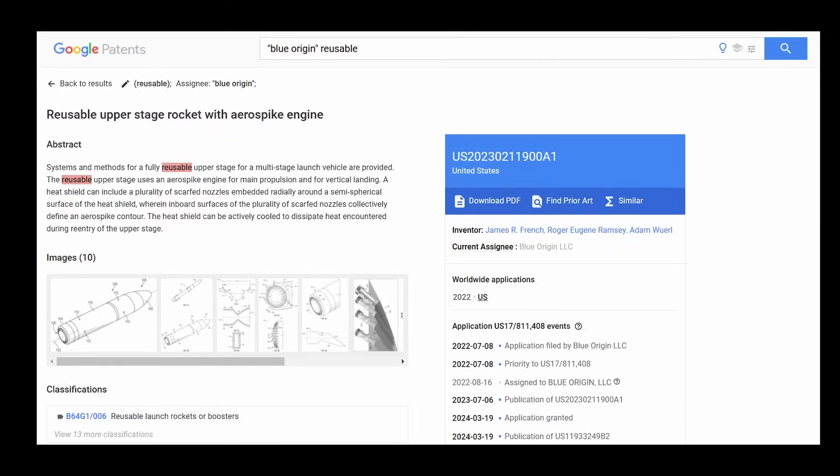Unlike SpaceX, Blue Origin does believe in rocket patents, and here's an interesting one for a reusable upper stage rocket with an aerospike engine. It's important to remember that there are many reasons to file patents, including to confuse your competitors, and therefore this is going to be speculative. But it's the best detailed data I've been able to find, so we'll either end up somewhat enlightened or somewhat confused.